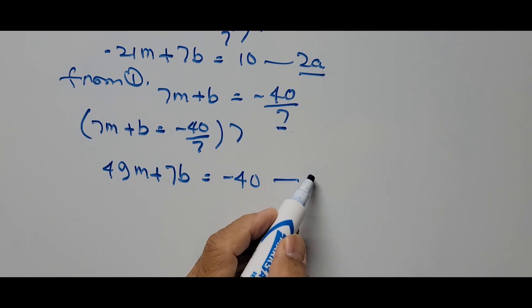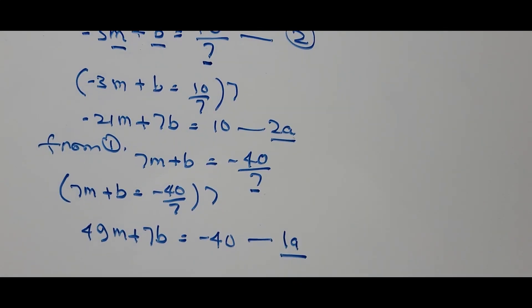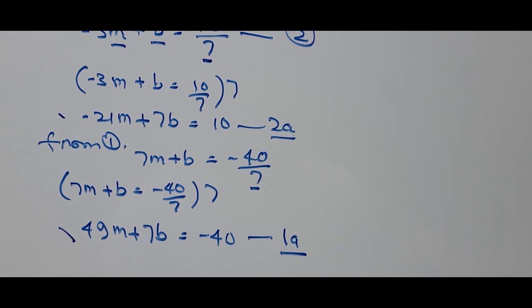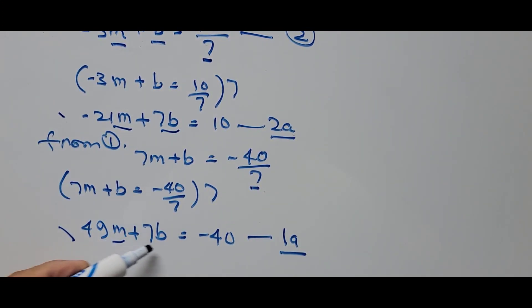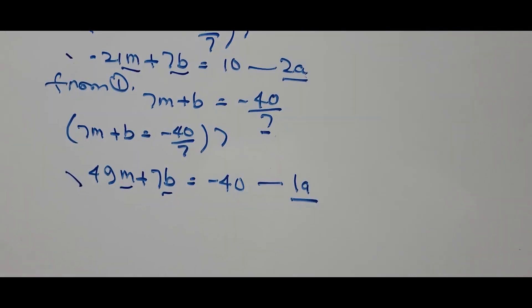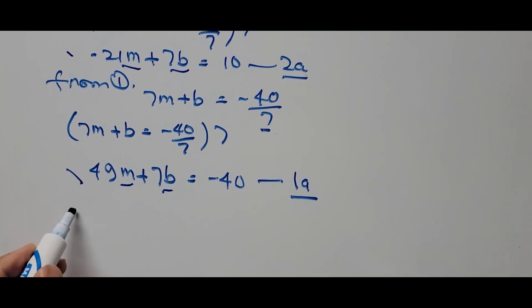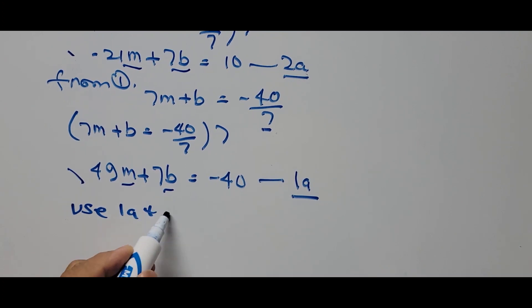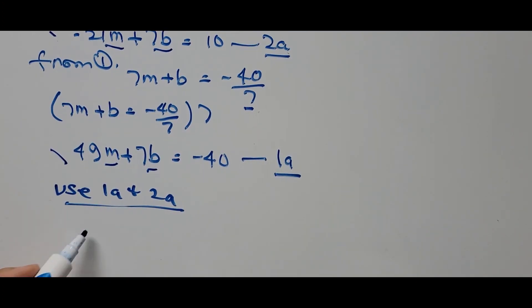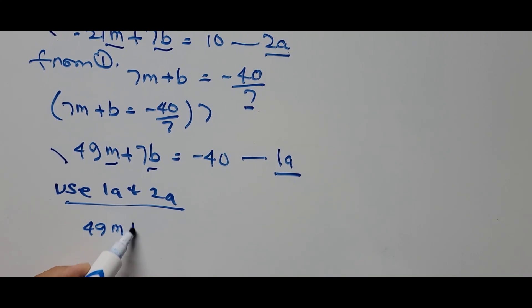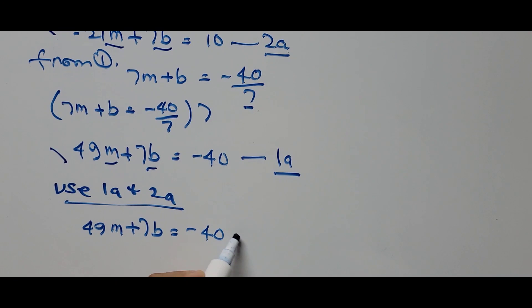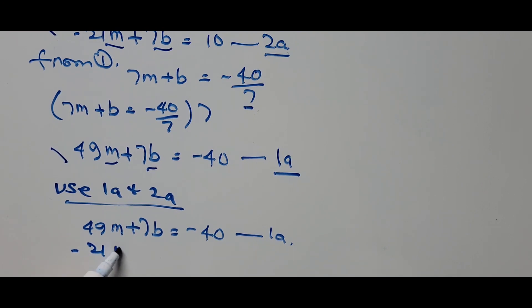We now have two new equations, 1a and 2a, with two unknowns m and b. Equation 1a is: 49m + 7b = negative 40. Equation 2a is: negative 21m + 7b = 10. We will solve these simultaneously.